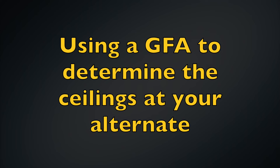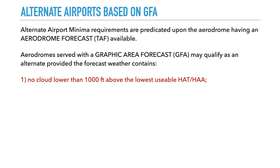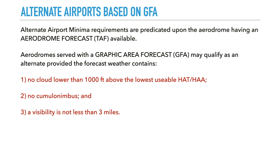All this time I've been talking about using a TAF to determine your alternate weather, but some airports are not serviced by a TAF. In that case, you are allowed to use a GFA — a Graphical Area Forecast — provided that the weather on the GFA shows no lower than 1,000 feet above the lowest HAT or height above airdrome, there are no cumulonimbus in the forecast, and the visibility is not less than three statute miles.